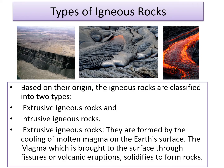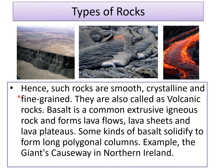Our next topic is types of igneous rocks. Based on their origin, the igneous rocks are classified into two types: extrusive igneous rocks and intrusive igneous rocks. Extrusive igneous rocks are formed by the cooling of molten magma on the earth's surface. The magma which is brought to the surface through fissures — long deep openings in the earth — or volcanic eruptions solidifies to form rocks. Such rocks are also called volcanic rocks. They are smooth, crystalline and fine-grained. Basalt is a common extrusive igneous rock and forms lava flows, lava sheets and lava plateaus.